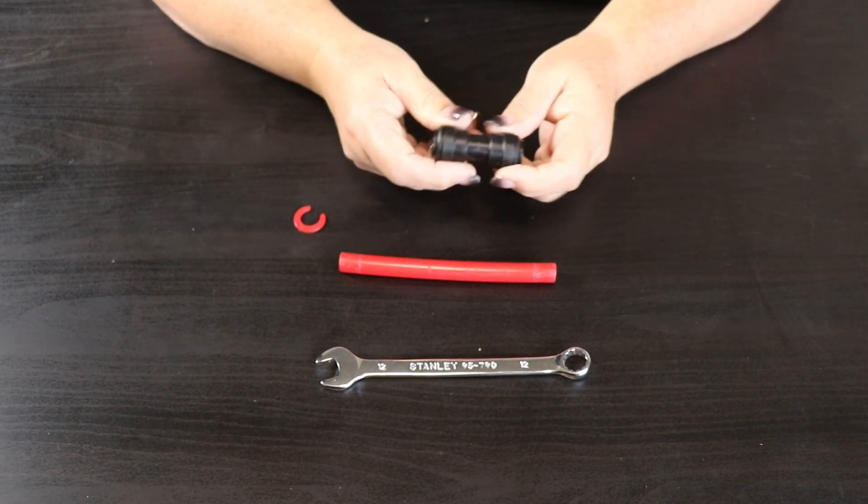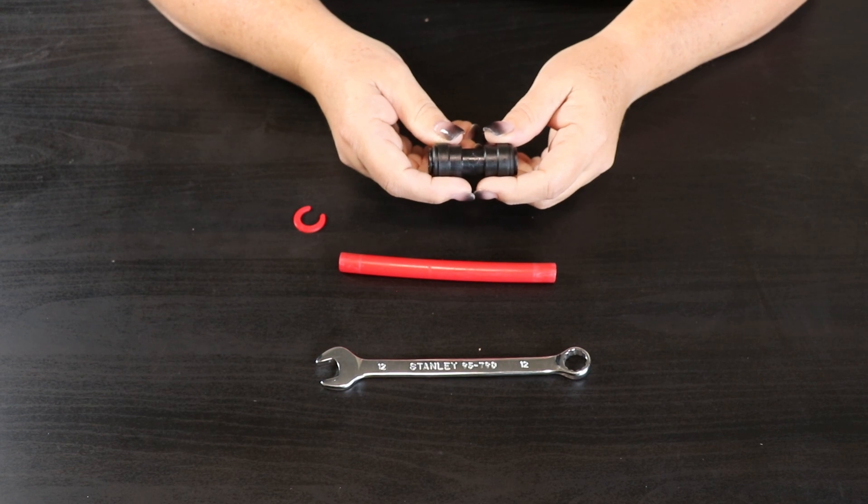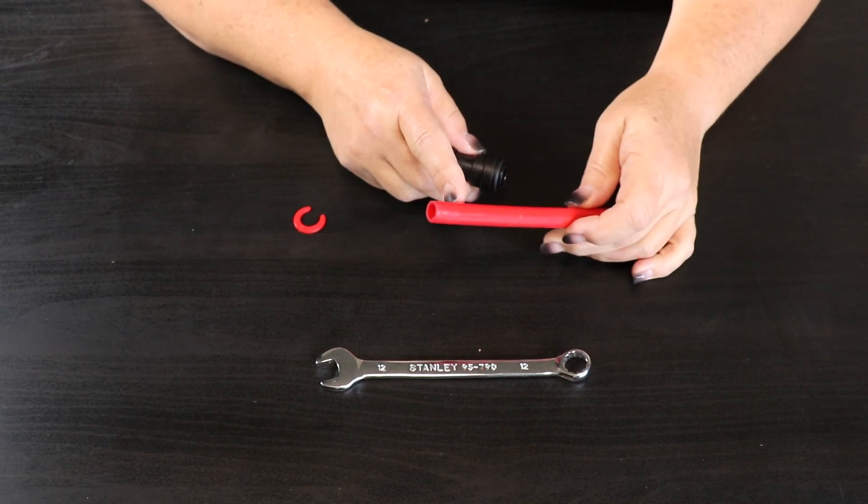G'day folks, I'd like to talk to you about John Guest fittings and tubes, probably one of the most popular used in the RV industry. If you need to cut the tube, make sure it is a very square cut with no burrs.